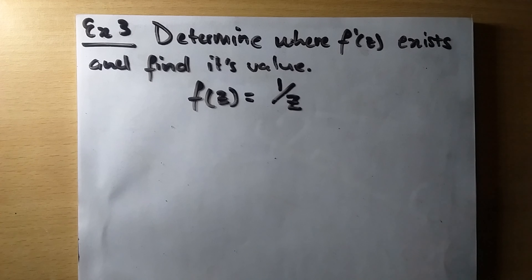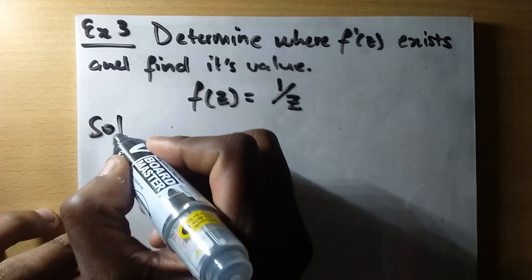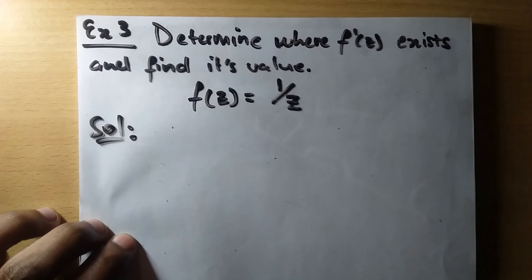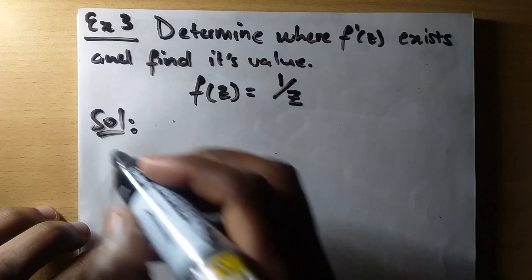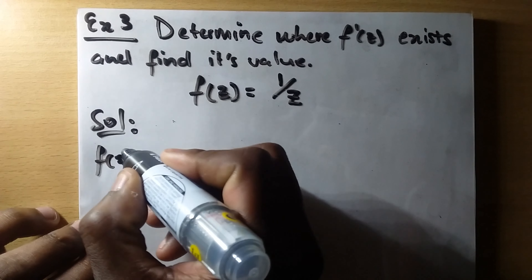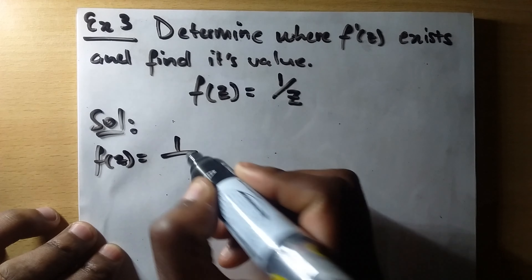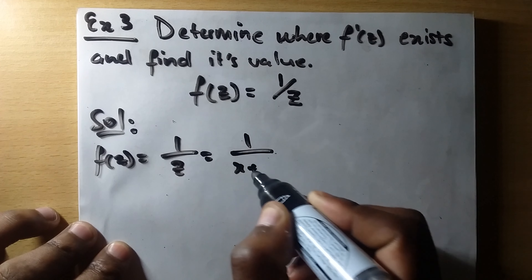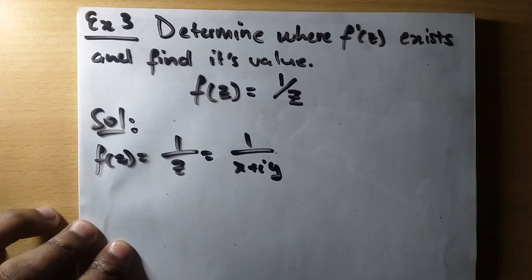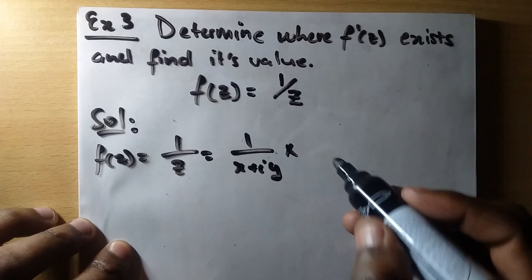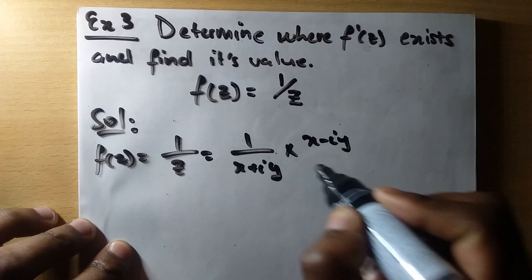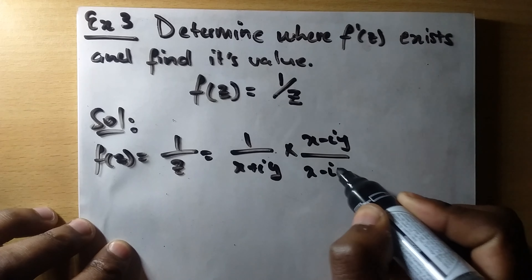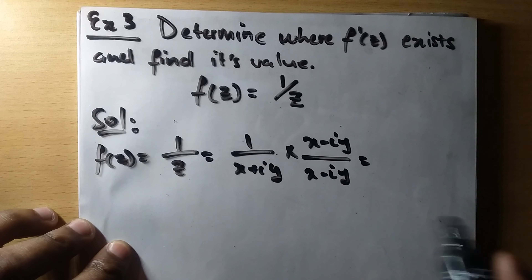For now let us just go through and see how we can approach this one using the sufficient conditions of differentiability. Looking at this, we should determine whether the derivative exists and find its value. So let us write down our solution. We know that f(z) is equal to 1 over z, which is the same as writing 1 over (x + iy).